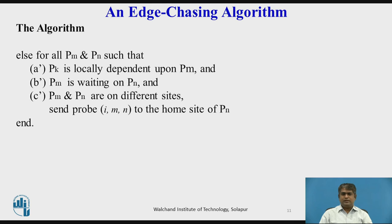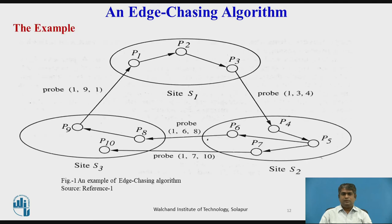A probe message is successfully propagated along the edges of the global transaction wait-for graph, and deadlock is detected when a probe message returns to its initiating process. For example, consider the system shown in the figure. If process P1 initiates deadlock detection, it sends probe 134 to S2. Since P6 is waiting for P8 and P7 is waiting for P10, S2 sends probes 168 and 1710 to S3, which in turn sends probe 191 to S1. On receiving probe 191, S1 declares that P1 is deadlocked.